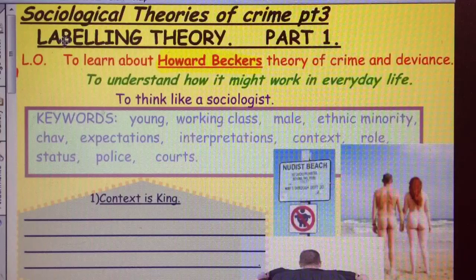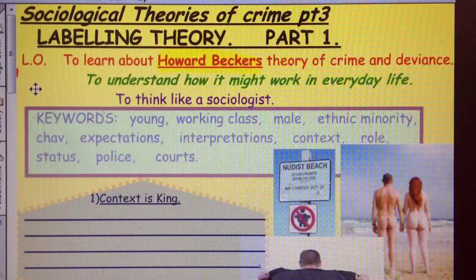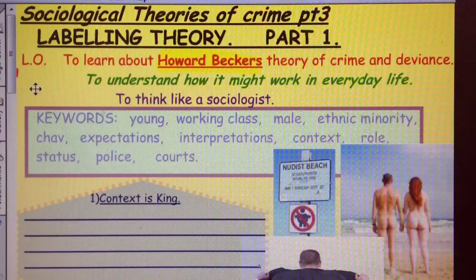Okay, our next sociological theory of crime is called labelling theory. There's a couple of lessons on this. It's quite a big deal. And it's not just a big deal in crime and deviance, it's a big deal in other parts of sociology as well. So it's important to get your head around it.